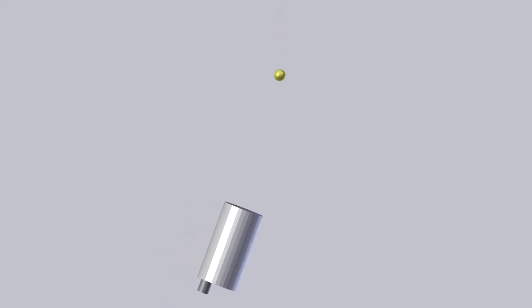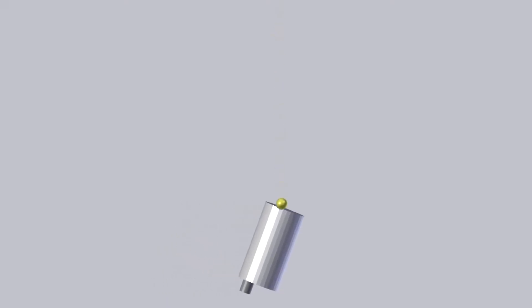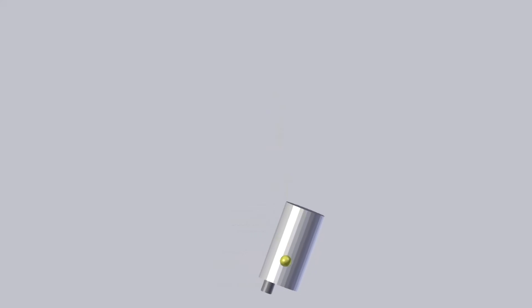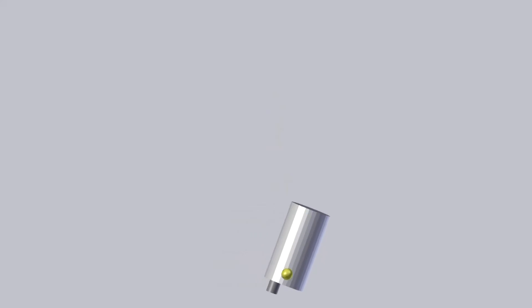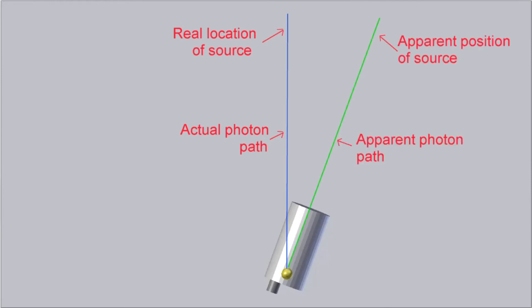In this animation, we see a photon falling vertically. A moving telescope is placed at an angle to receive the photon. The path of the photon is this, and the observer sees it here.